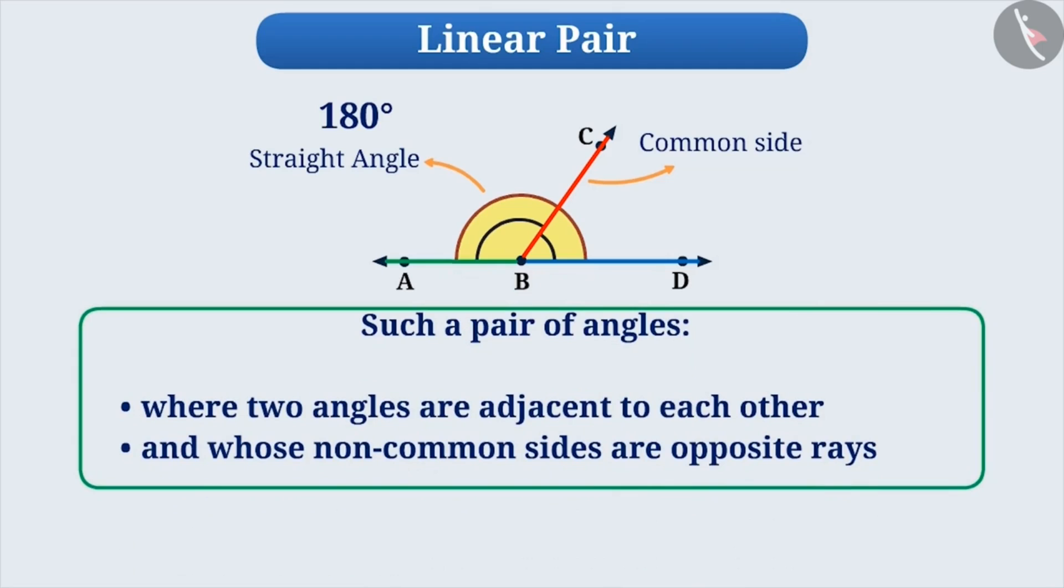Such a pair of angles, where two angles are adjacent to each other and whose non-common sides are opposite rays, is called a linear pair.